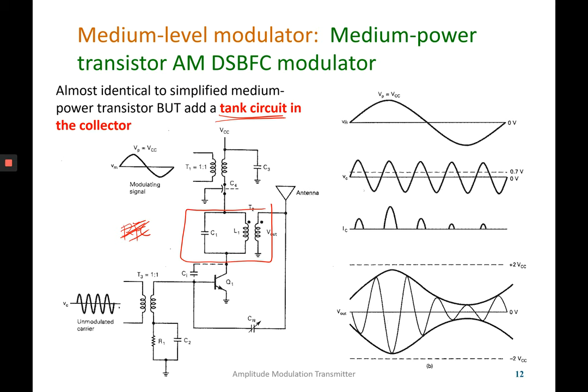The tank circuit, which we already learned about in Chapter 3, uses a coil and capacitor. This will produce a more refined output before the antenna and provide a better medium power output or envelope. So that is the key feature of this medium level modulator.